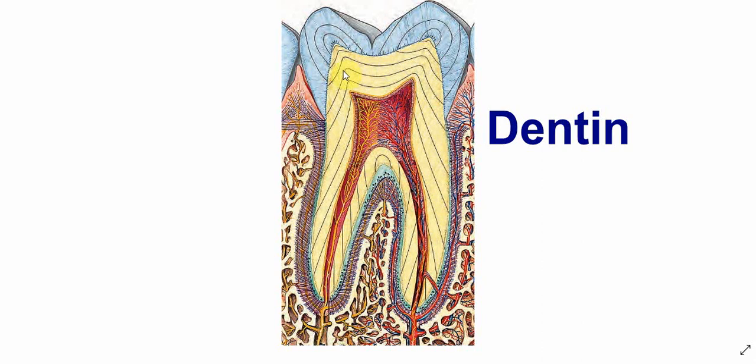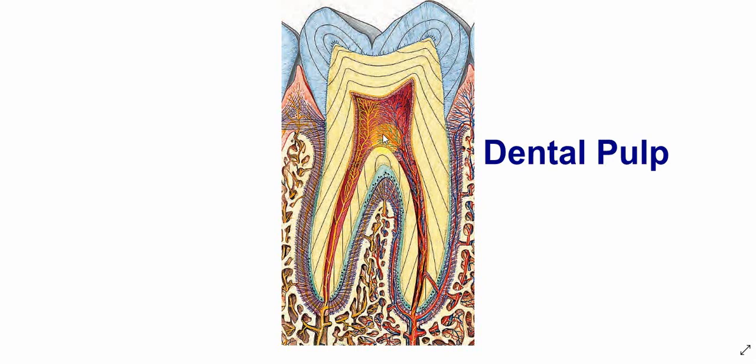The central portion of the tooth comprises of a soft tissue known as the dental pulp. This dental pulp provides nutrition because of the presence of blood vessels throughout the dental pulp, and it also provides sensory supply to the tooth.